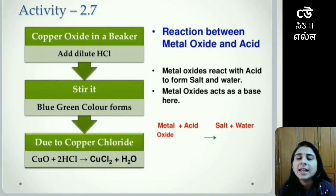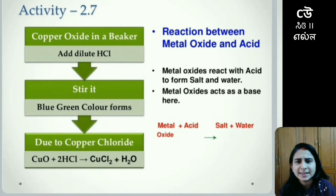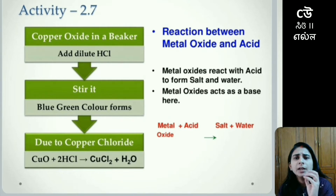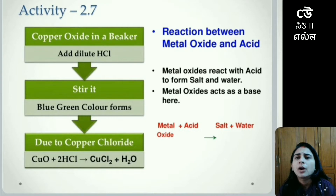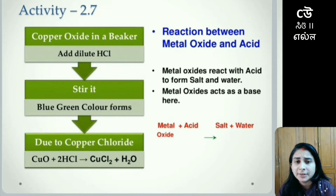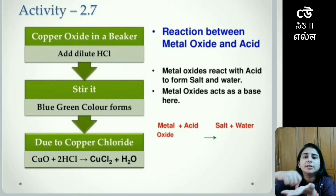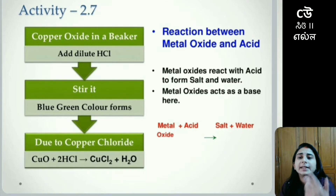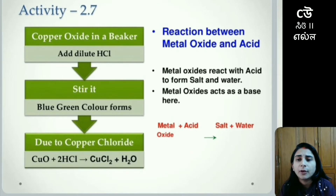Activity 2.7 is about the reaction between a metal oxide and an acid. Just like acids and bases, it will give salt and water. Here we have copper oxide in a beaker. When copper oxide mixes with dilute hydrochloric acid, we have to stir that solution. Stirring will give a blue-green color, because of the formation of copper chloride.